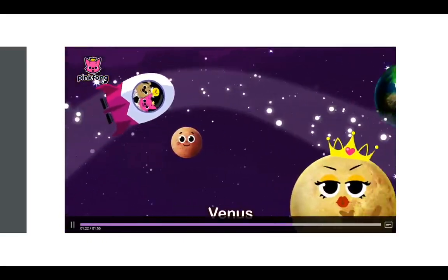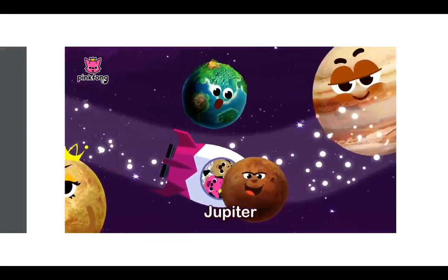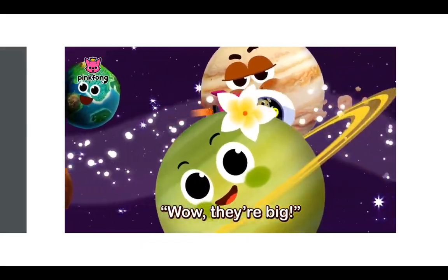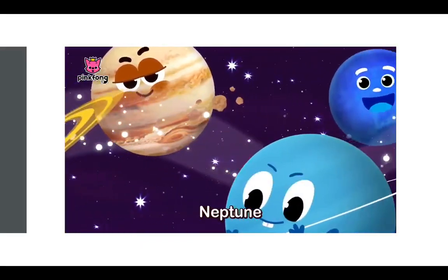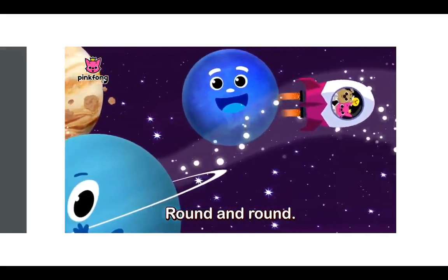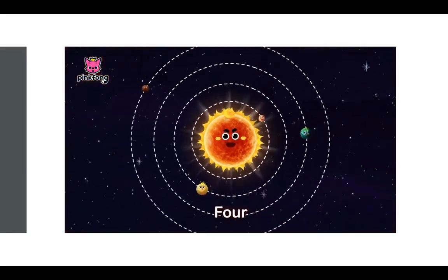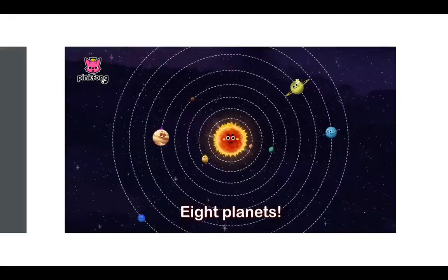Mercury, Venus, Earth and Mars. Jupiter, Saturn. Wow, they're big. Uranus, Neptune, round and round. 1, 2, 3, 4, 5, 6, 7, 8 planets.